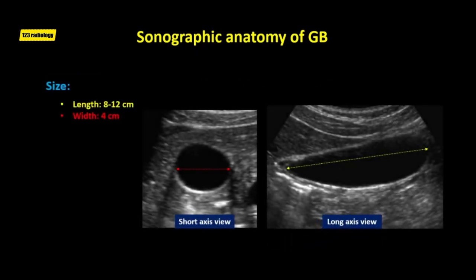The upper limit of normal transverse diameter of the gallbladder is four centimeters. The length of a normally distended gallbladder is variable but generally does not exceed 12 centimeters. Hydrops is considered when gallbladder length is greater than 12 centimeters and width greater than four centimeters. The length and width of the gallbladder are measured in longitudinal and short-axis views.